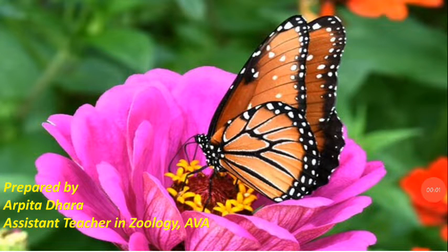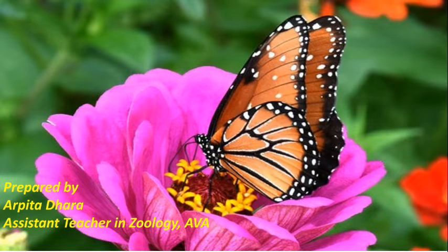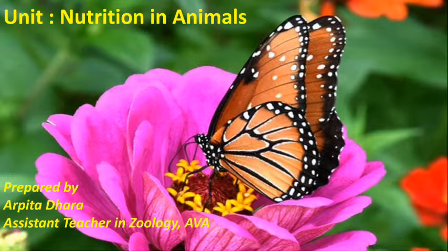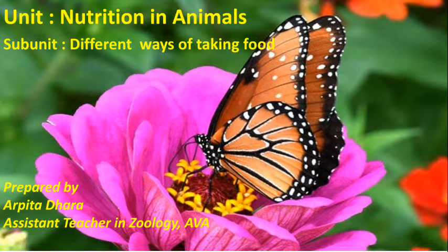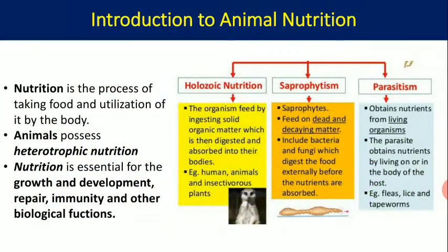Hello students, I am your DPD ma'am and today we are going to discuss the first part of your chapter: Nutrition in Animals. The topic is different ways of taking food. Let's start our discussion with the term animal nutrition. Nutrition is the process of taking food and utilization of it by the body.